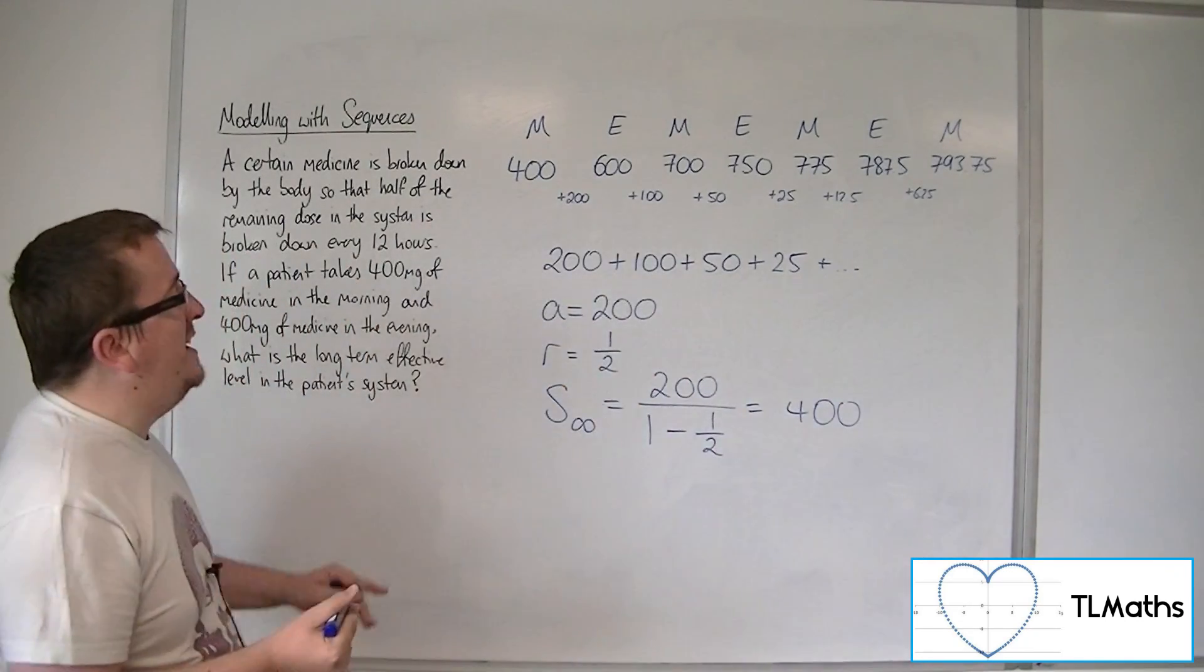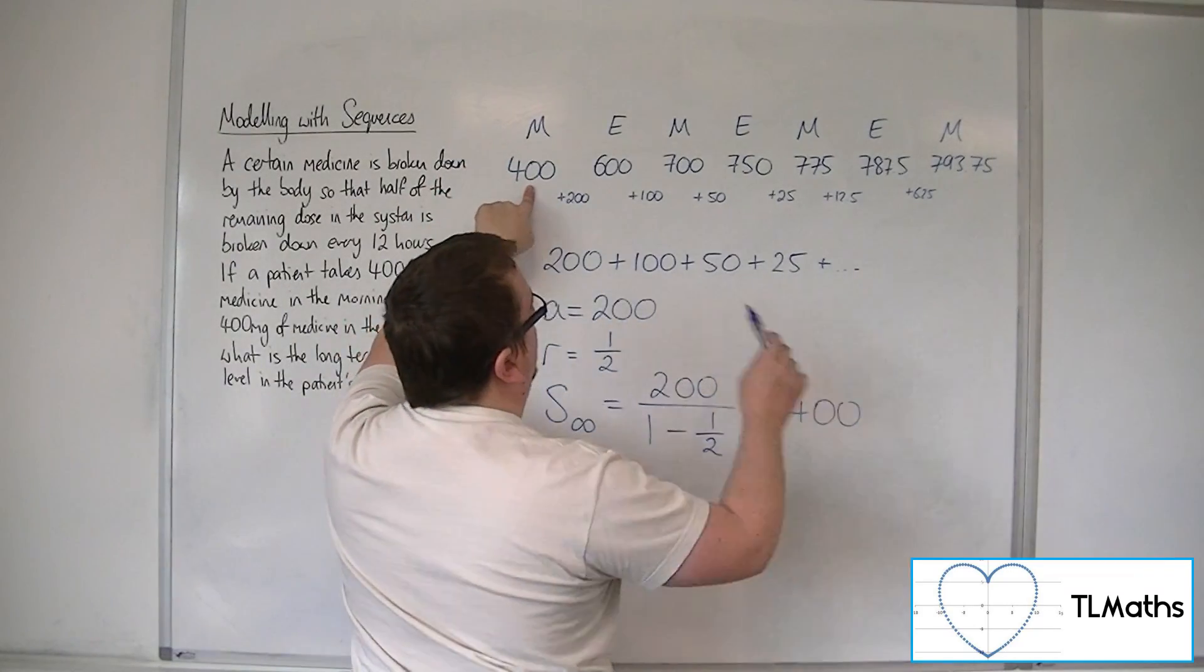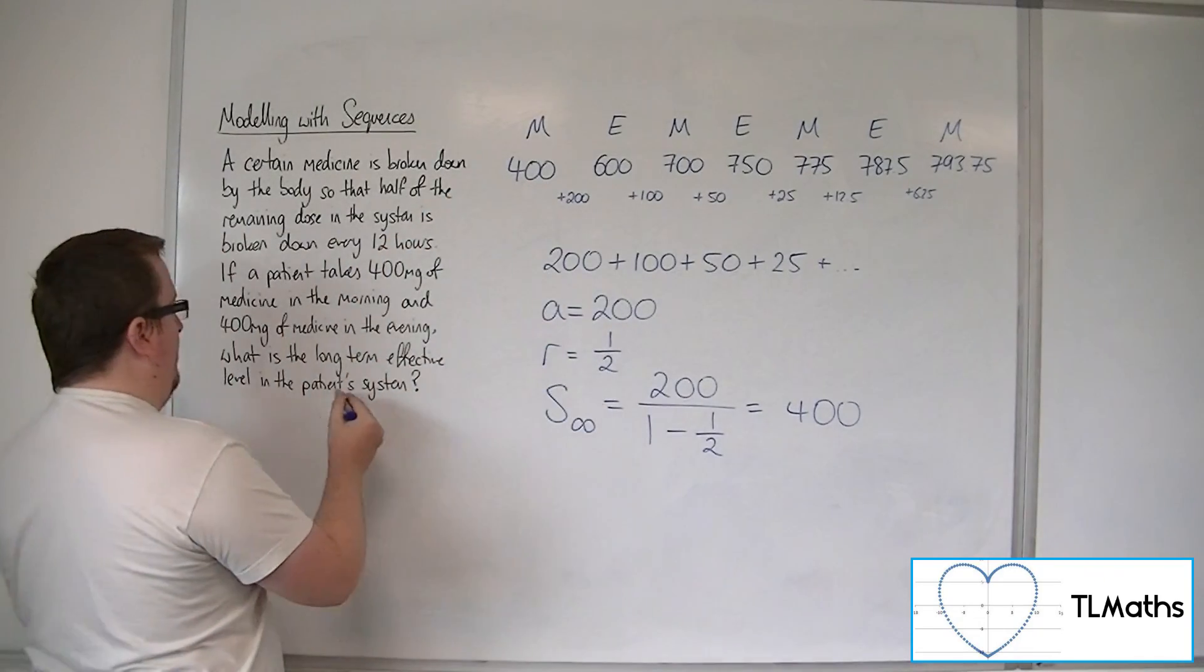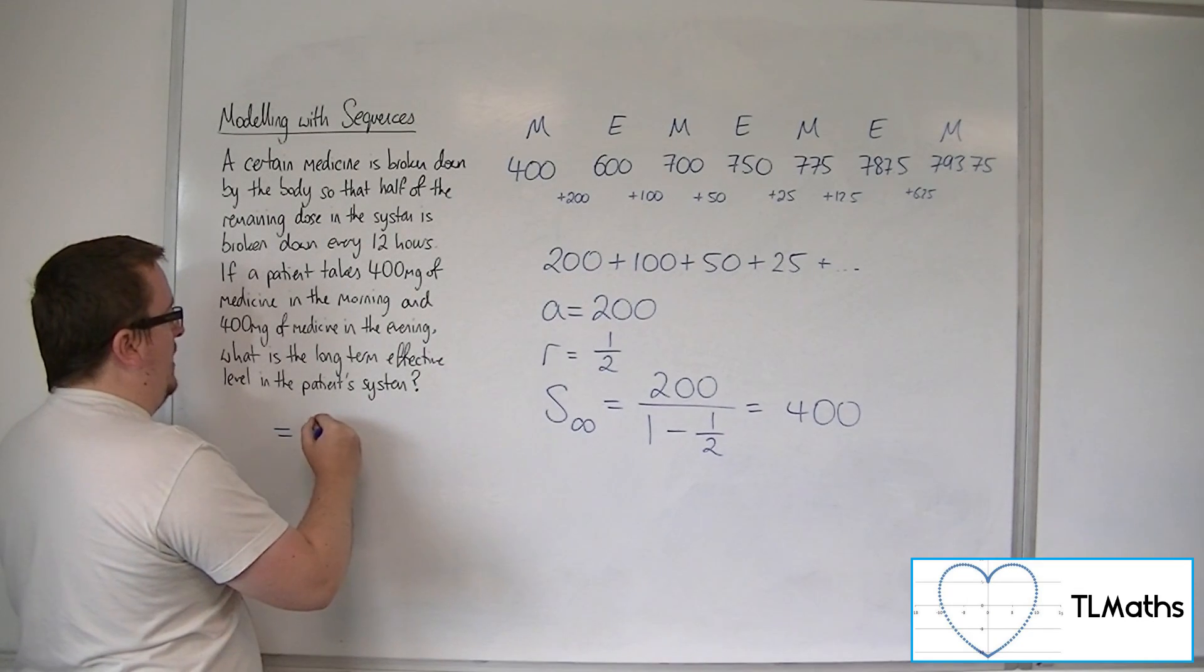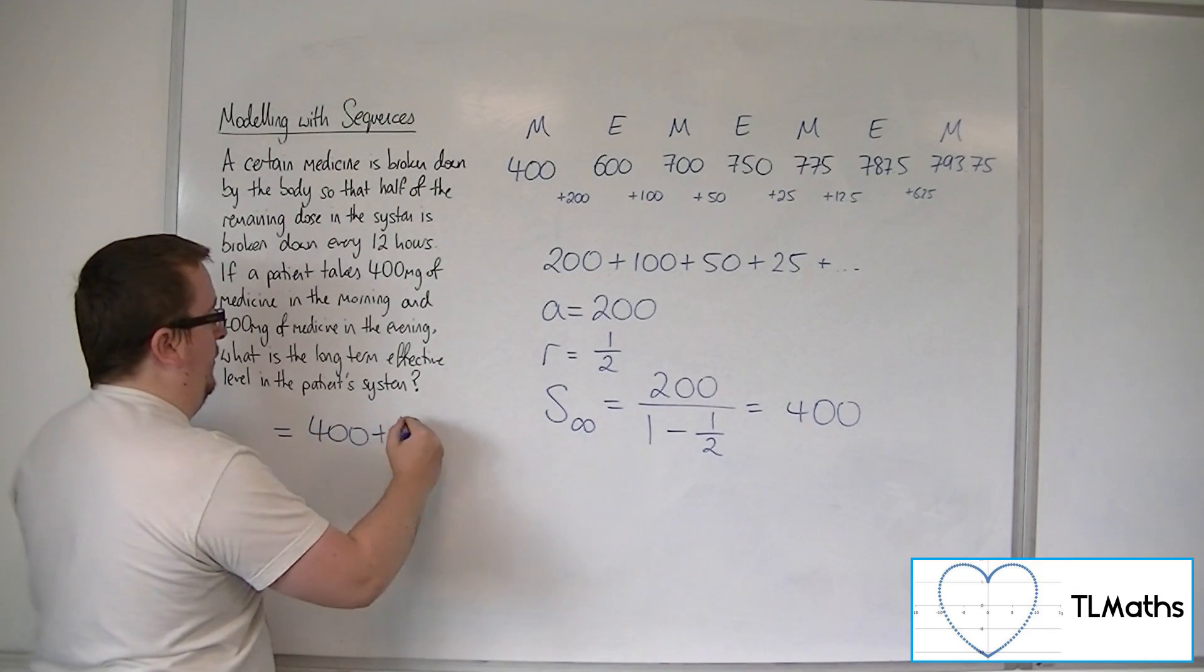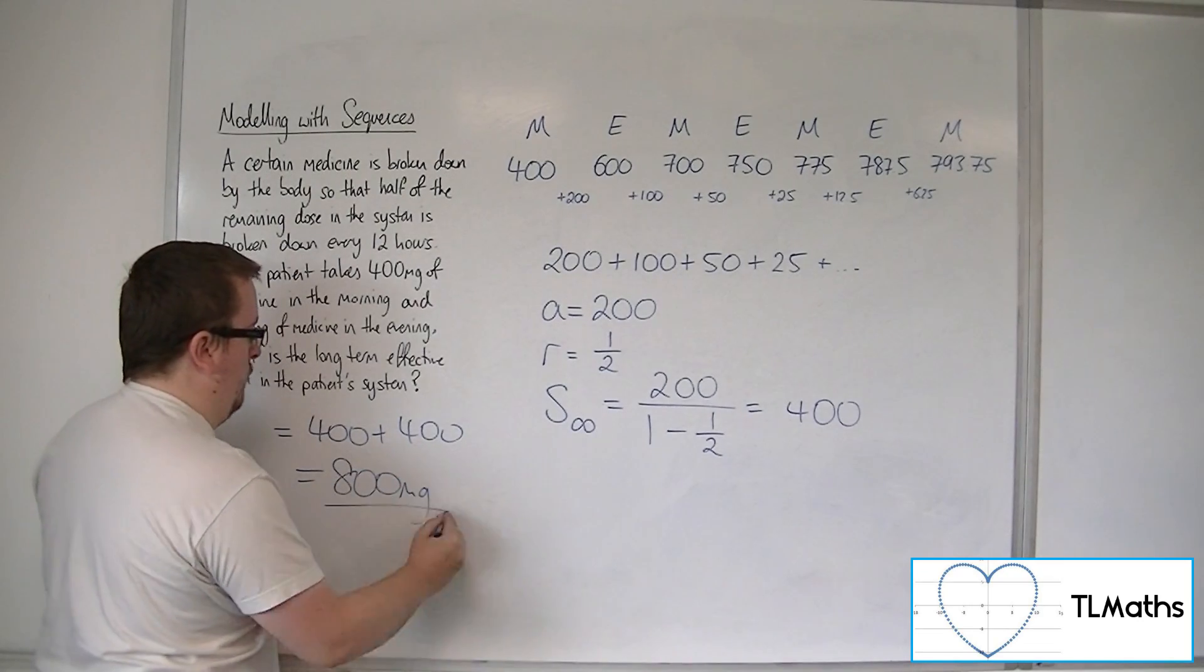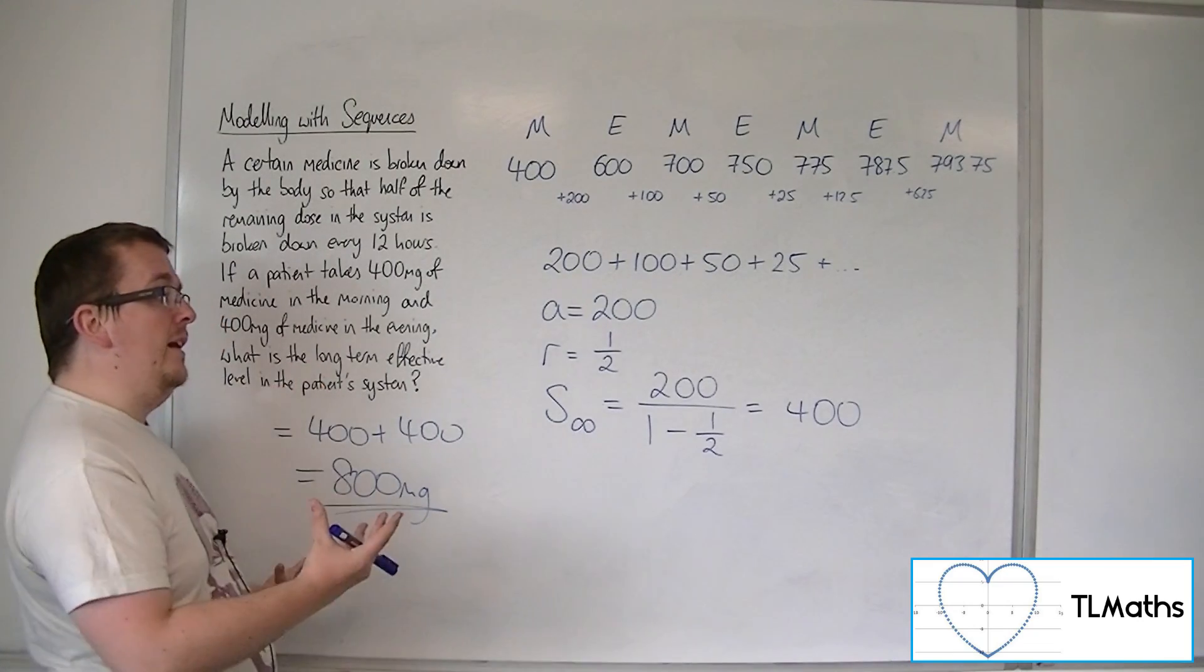So, the long-term effective level is that initial dose, plus this sum to infinity. So, the long-term effective dose, or effective level, is actually 400, plus the 400. So, 800 milligrams, okay? And that is how,